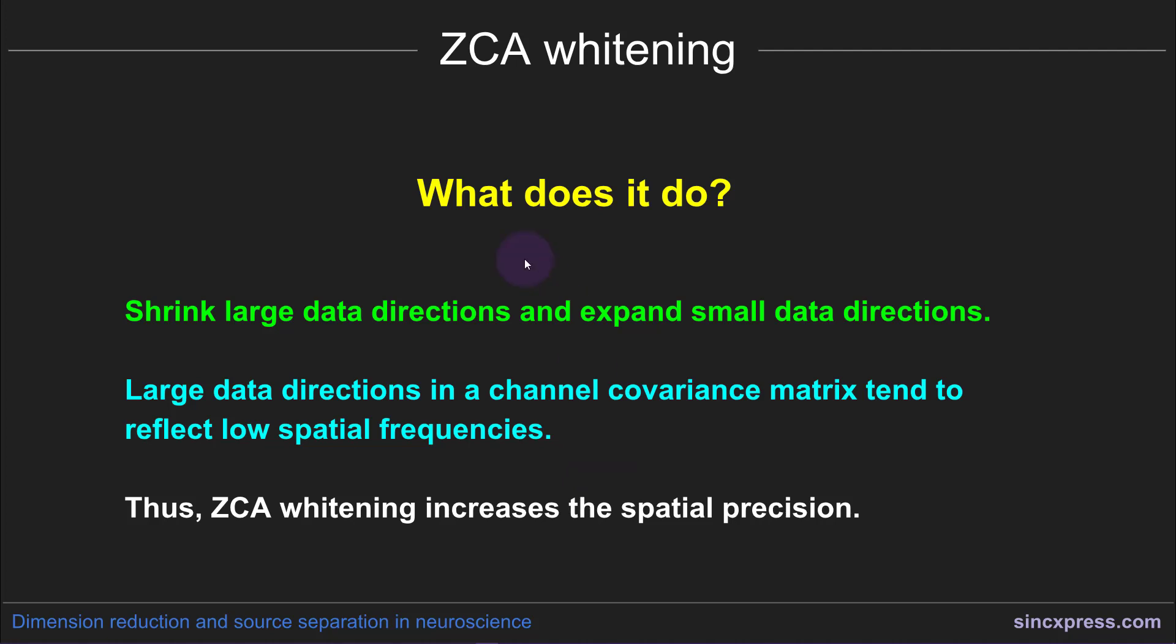Okay, so that was all a bit of math. Now let me try to speak more generally. What does this method do? So the effect of whitening is to shrink large data directions and expand small data directions. Now this is interesting because in typical neuroscience datasets, and this may or may not be true for other kinds of datasets, but you often see in electrophysiology that large data directions,